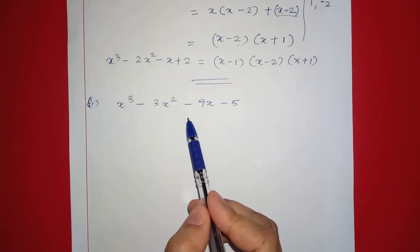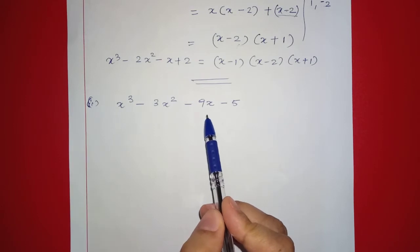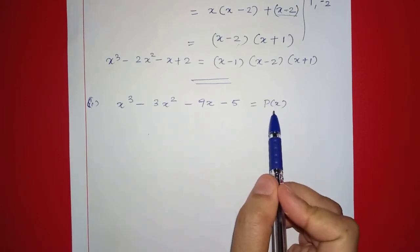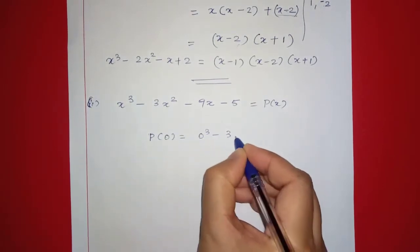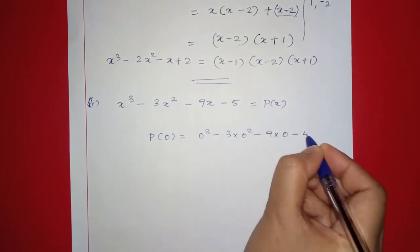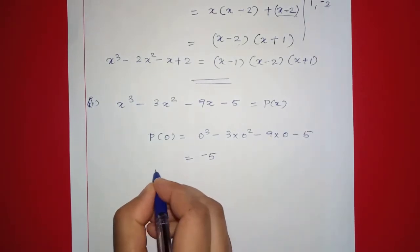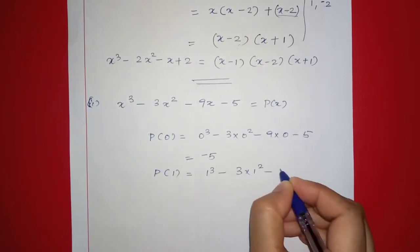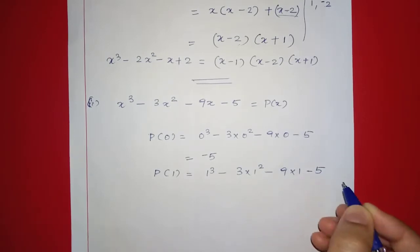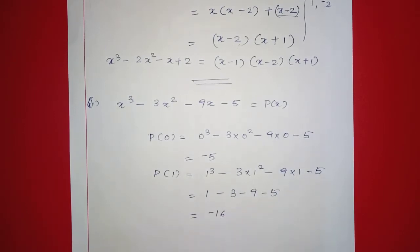Next question: x raised to 3 minus 3x squared minus 9x minus 5. We test P of 1: that is 1 minus 3 minus 9 minus 5, which equals negative 16. So P of 1 is not 0. Next, P of negative 1.